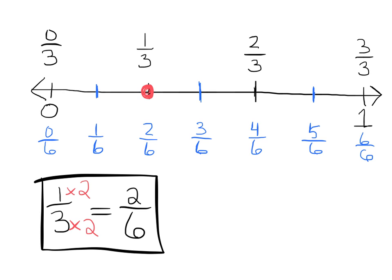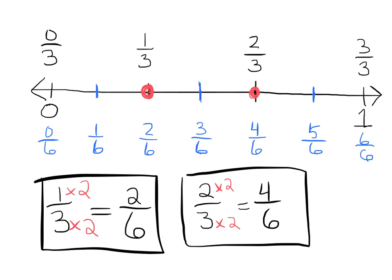Do we see another one? Sure. We see two-thirds right here is equivalent to four-sixths. We can see that two times two is four, and three times two is six, and there is our relationship.